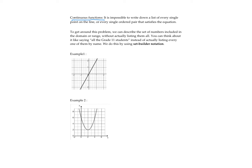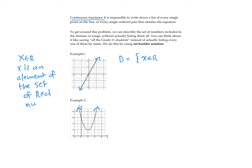In the first example, if you see a graph like this, assume that it is continuous at each end. The arrows are not drawn in, but we assume it goes on forever toward positive and negative infinity. Set builder notation starts with the set of real numbers. When we have a continuous function, we say x is an element of the set of real numbers.